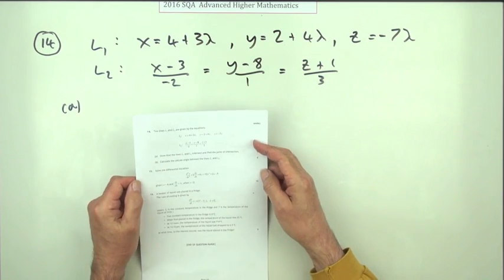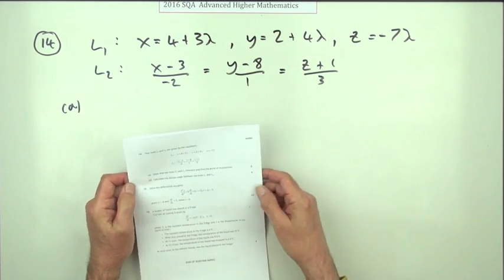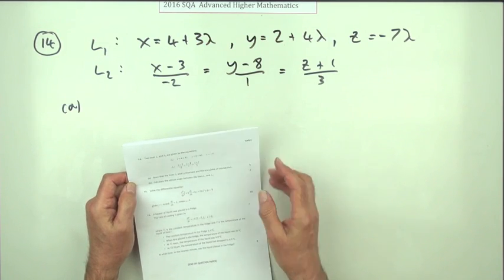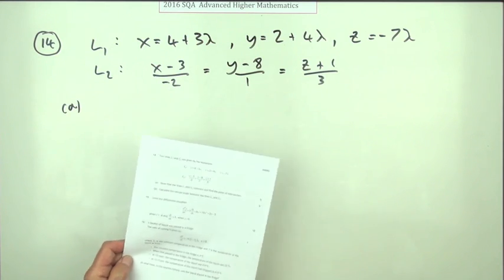Question 14 from the 2016 Advanced Higher Maths. Three-dimensional geometry, equations of lines in three dimensions. Part A for five marks. Show that these two lines intersect and find the point of intersection.